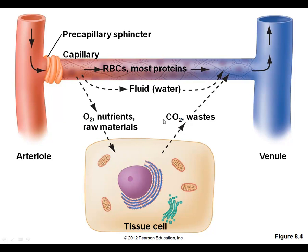Waste, carbon dioxide, and excess water can return into the venous side of the capillaries and from there to the venules. However, excess water, larger proteins, dead cells, and bacteria cannot go back through the capillaries. So the interstitial space is also drained by the lymphatic vessels — the lymph or lymphatic system.